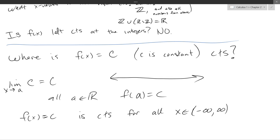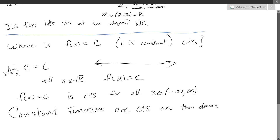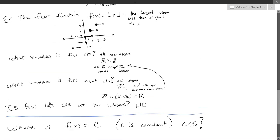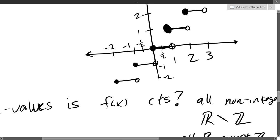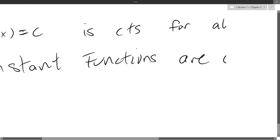I'll specify: constant functions are continuous on their domain, which is usually all real numbers. We could use that result — this function is not constant overall, but if you look at small intervals it's constant. For example, on the open interval (0, 1) it's constant, so it's continuous there; on (1, 2) it's constant, continuous there. So I can use this theorem to say the function is continuous on each of these small open intervals.